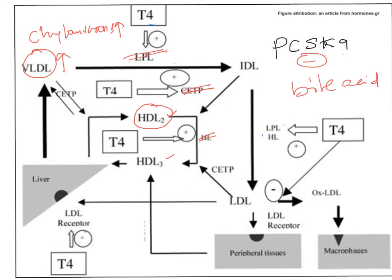Decreased T3 and T4 also reduce the expression of LDL receptors on the hepatocyte membrane. Because of this, circulating LDLs are not taken up efficiently, leading to elevated LDL levels and hypercholesterolemia. Additionally, since T3 and T4 normally repress PCSK9 expression, in hypothyroidism PCSK9 is no longer repressed.